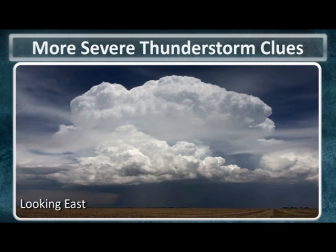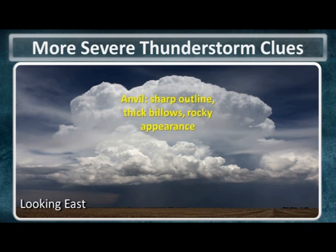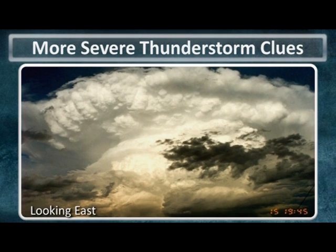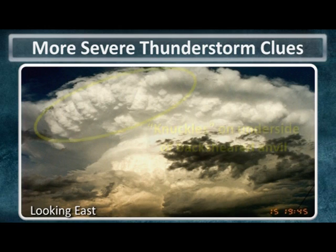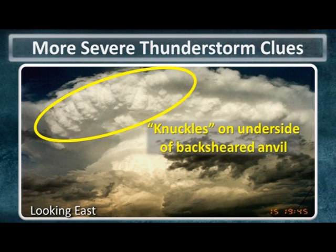Here's a different example of a severe thunderstorm. Similar to the last example, we notice very thick and sharp cloud outlines, this time more so in the anvil region of the thunderstorm. Again, if the anvil or main updraft of the storm appeared soft or fuzzy, the storm's intensity would be much lower. In this case, take note of the appearance of the underside of this particular backsheared anvil. The updraft is so intense that it's creating what's known as knuckles on the underside of the backsheared anvil. If you ever see knuckles this well defined, you can be certain the thunderstorm is producing some type of severe weather.